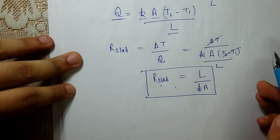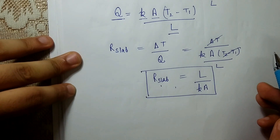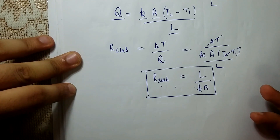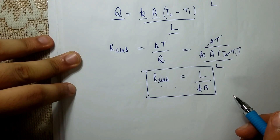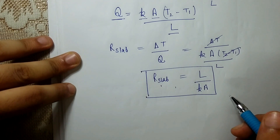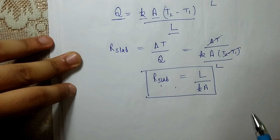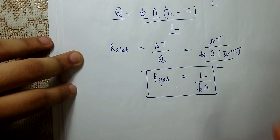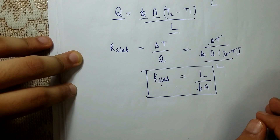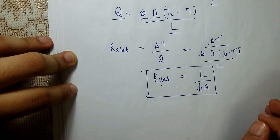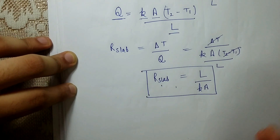So this is the complete derivation of one-dimensional steady state heat conduction without heat generation for a plane slab. In the next video, we will study the same for a composite slab and also get familiar with the overall heat transfer coefficient. Please like, share, and subscribe. Thank you for your time.